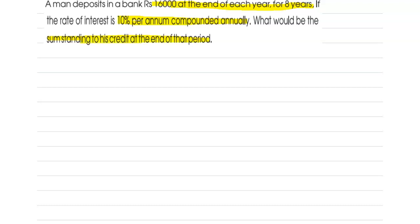The explanation for this question is: A man is investing in a bank rupees 16,000 at the end of each year for 8 years, and the rate of interest paid for that amount is 10% per annum compounded annually. Now we have to find the sum at the end of 8 years.